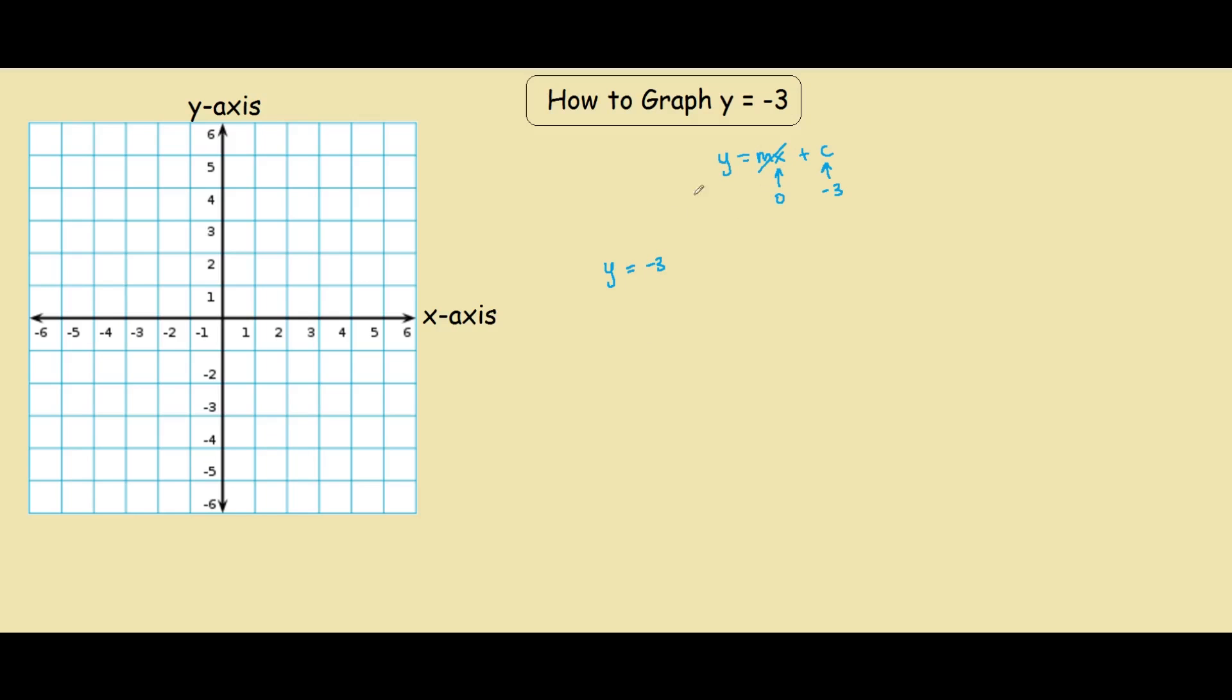And from previous lessons, we know that the slope of the line is the coefficient in front of the x, the m. The m is the coefficient.